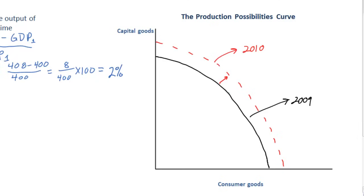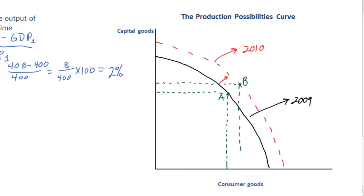If we put two points - point A and point B - between the years 2009 and 2010, Switzerland underwent economic growth which enabled it to produce more consumer goods while simultaneously producing more capital goods. This is clearly beneficial for Switzerland, which helps explain why economic growth is one of the three primary macroeconomic objectives of a nation.